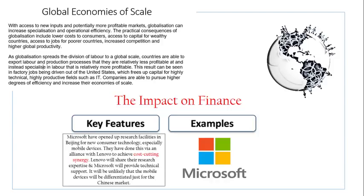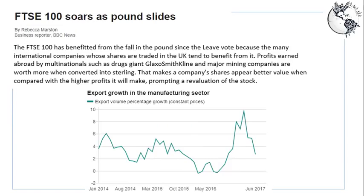Microsoft uses Lenovo's expertise in the Chinese market and doesn't have to research it themselves, which brings down their costs. So we've got three types of impact: a revenue impact and a cost impact, and as an organization becomes international, we're also going to have export and exchange rate effects.